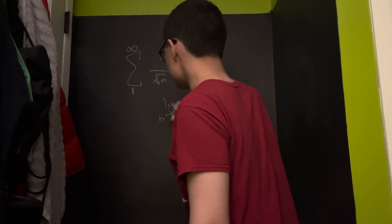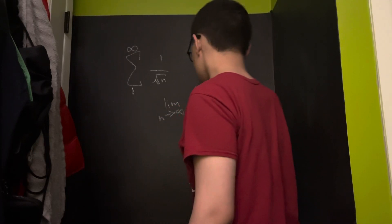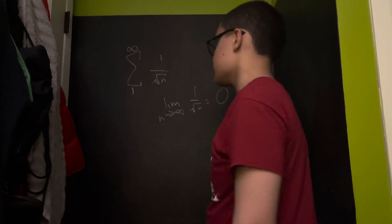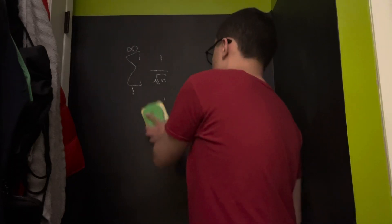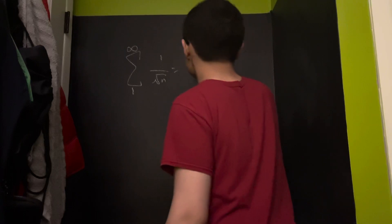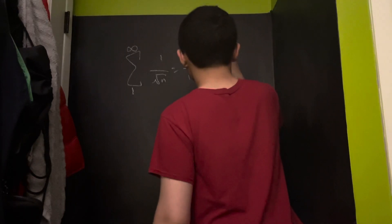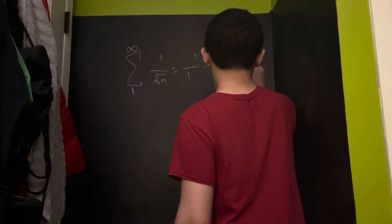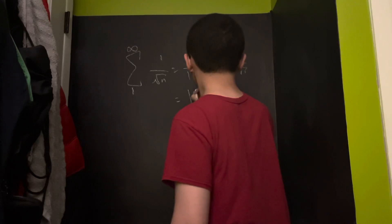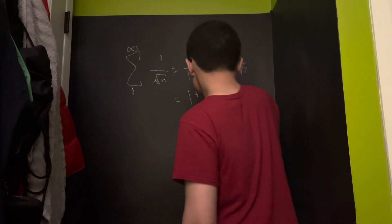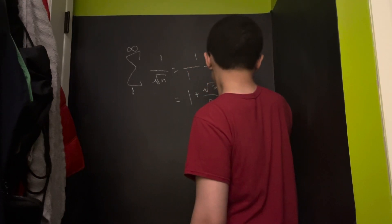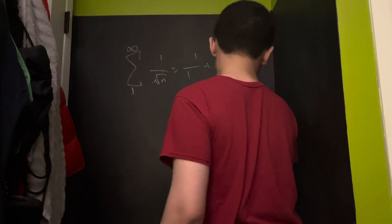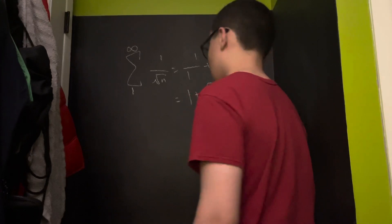The limit as N approaches infinity of 1 over square root of N will equal 0. Therefore, the limit test is inconclusive. I'll just write out the series: 1 over 1 plus 1 over square root of 2 plus 1 over square root of 3. So it'll be 1 plus — 1 over square root of 2 is the same as square root of 2 over 2 — plus square root of 3 over 3 plus dot dot dot. And square root of 4 over 4 is 2 fourths, so plus 1 half, dot dot dot. This obviously diverges.